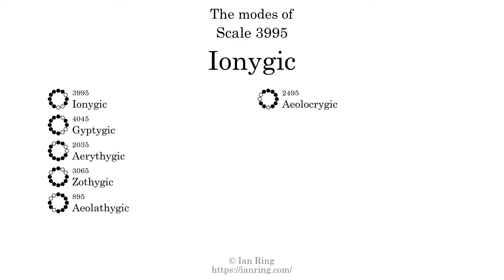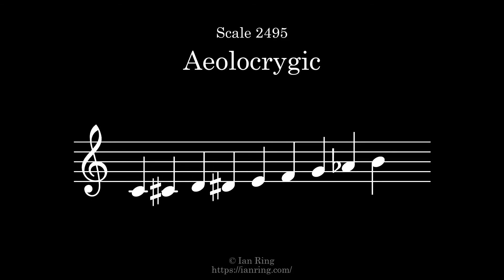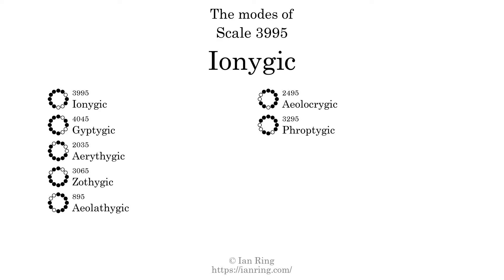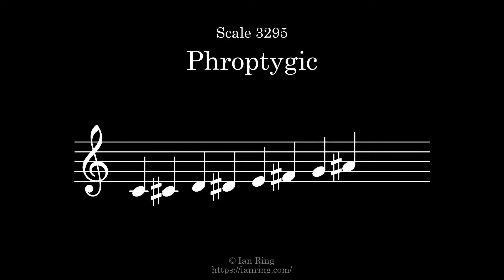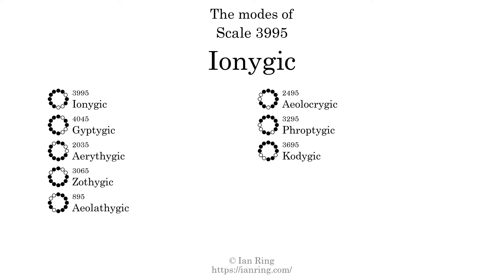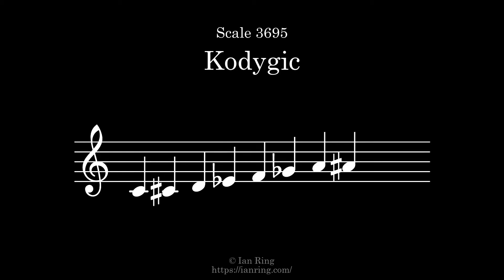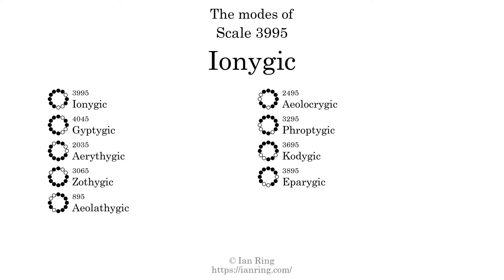The 6th mode is scale 2495, also known as Elethargic. It sounds like this. The 7th mode is scale 3295, also known as Froptergic. It sounds like this. The 8th mode is scale 3695, also known as Kodajic. The 9th mode is scale 3895, also known as Elethargic. It sounds like this.